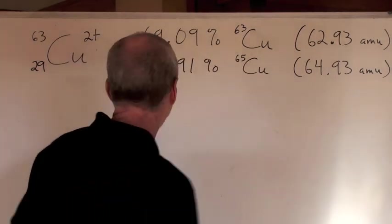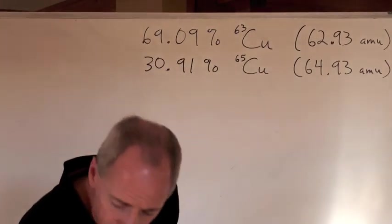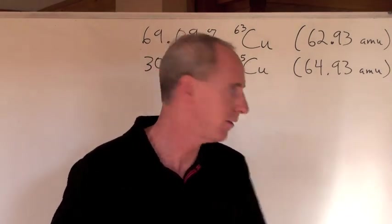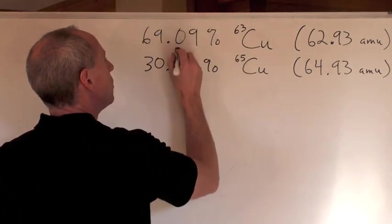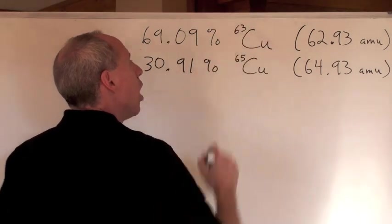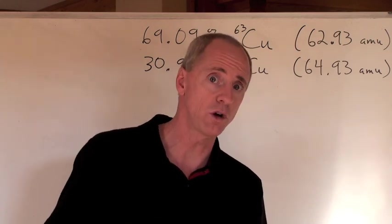Okay. I say to you this. I've got copper in the following percentages in this world. Well, we all got it. And it's this: 69.09% of all the copper that we know of is essentially copper-63, which is that isotope of it.